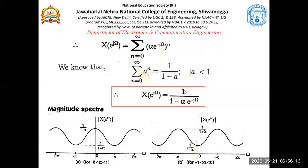When alpha is positive (0 to 1), the maximum of the magnitude spectrum is 1/(1−α) and the minimum is 1/(1+α). When alpha is negative (−1 to 0), the spectrum is shifted. See the sketch and understand how it works for these values of alpha.